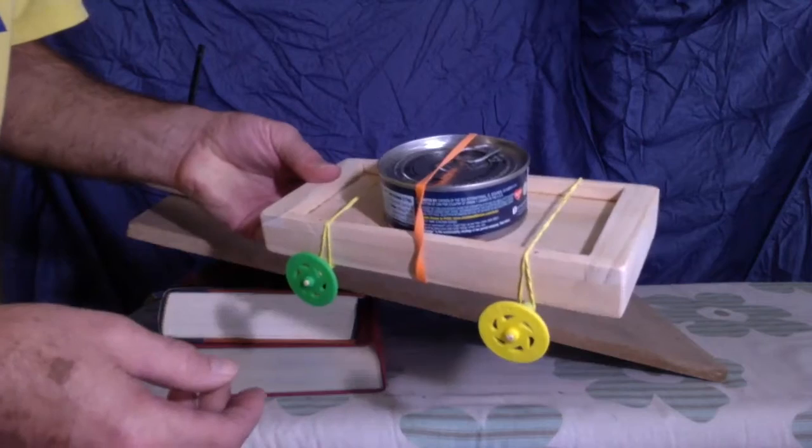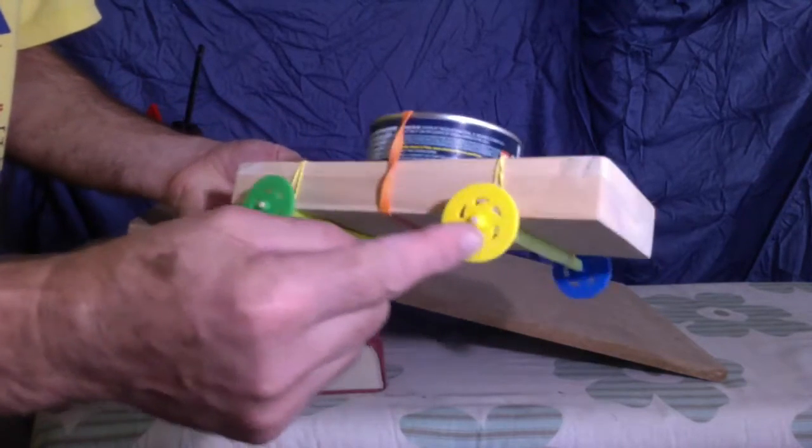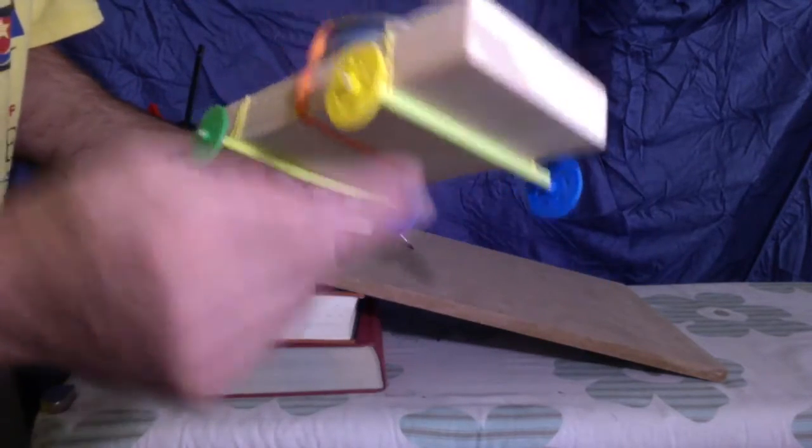What you're going to find in your kit is not only this block, but you're going to find these wheels, straws, and rubber bands.